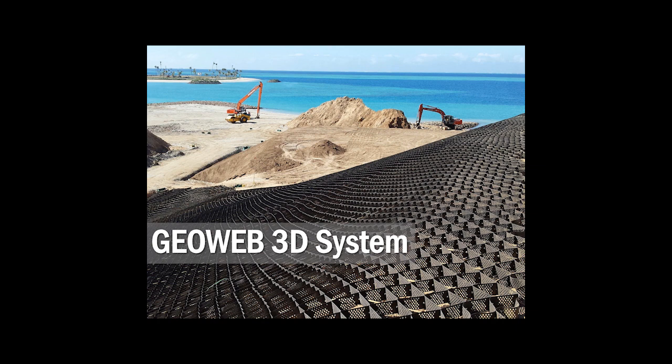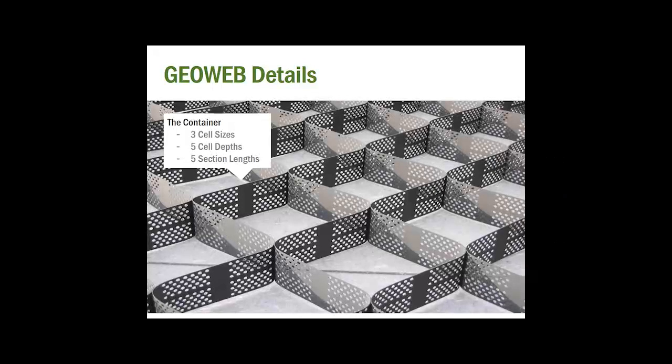Now we're going to move on to describing the GeoWeb 3D system. The GeoWeb system consists of two main attributes. The first is the cell or container size. The cells come in three diameters — small, medium, and large — with cell heights of 3, 4, 6, and 8 inches. The cell size and depth are going to depend on your project details and loading requirements. There are also five section lengths to best fit your project needs. The ultrasonically welded seam, where all of the connecting points are, is a very important function of the GeoCell. The stronger the seam, the better the performance of the GeoCell.